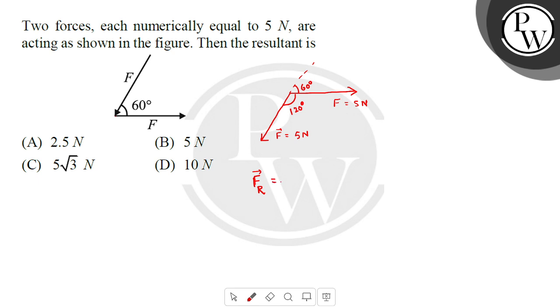The resultant Fr vector will be equal to... we just want to know the magnitude, so this will be equal to F square plus F square plus 2 into F1 into F2...